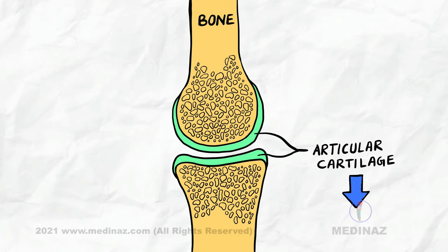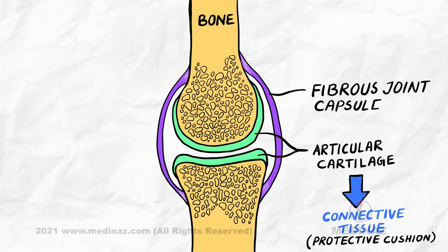Articular cartilage is a type of connective tissue that acts like a protective cushion between two gliding bones. Here is the fibrous joint capsule which continues with the periosteum. This fibrous joint capsule is lined with a synovial membrane.